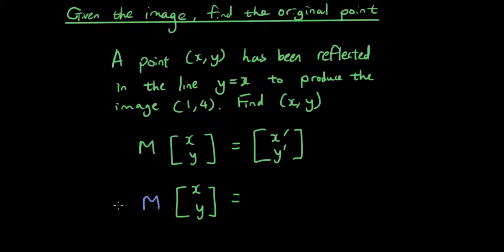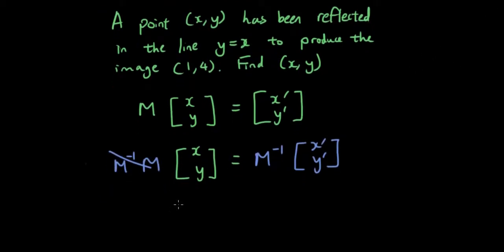So you got M on the left, we multiply both sides by the inverse of M. And then what's going to happen is M and inverse of M will cancel each other out, and then you can simply find out what x and y are based on this equation.